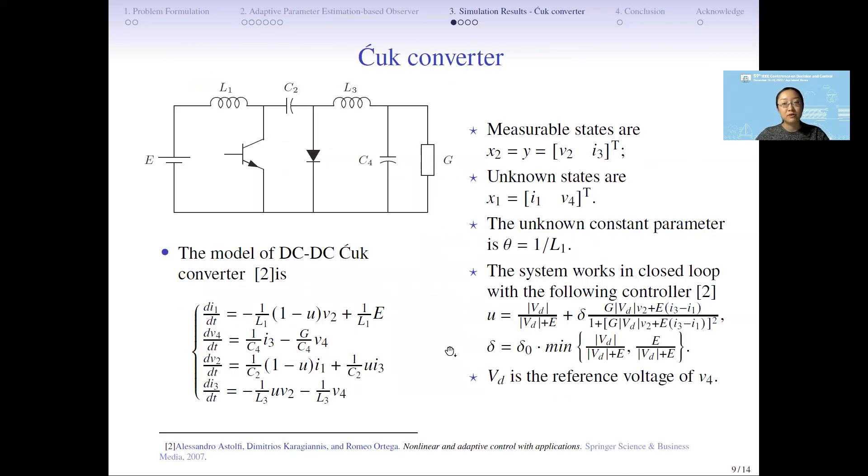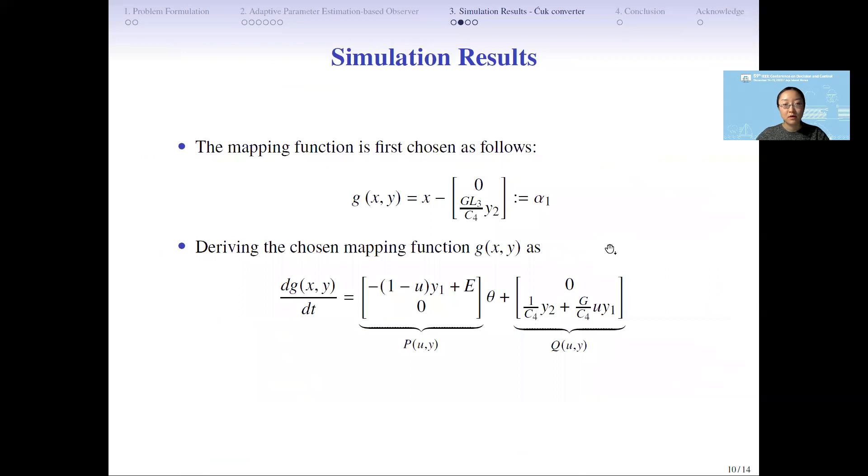The proposed observer will be validated through this KOOG converter. This KOOG converter is used to invert the polarity of the voltage and is usually used in DC power supply. The model we directly take from the cited reference. In this model, i1 and i4 we assume are unknown states, and the unknown parameter we choose is 1 divided by l1. Here is showing what we choose for the mapping function and validates the mapping function satisfies the assumption.